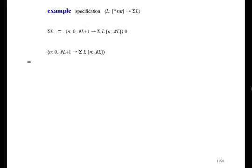One thing I don't like about this function is the plus one in the domain — we need it because n could be equal to the length of the list, but it's ugly. One way to get rid of it is to divide the domain into two parts: one part is zero to but not including the length of L, and the other part is just the length of L. That's not just to be pretty — we have to treat those two cases separately. We can separate them by using the selective union.